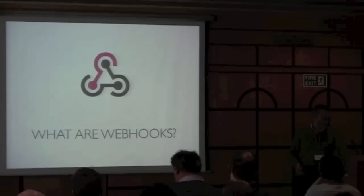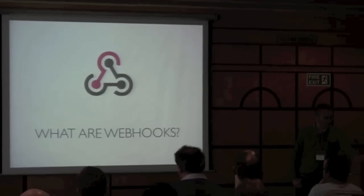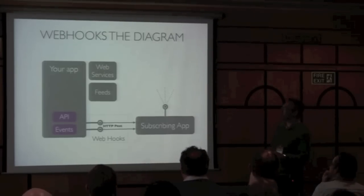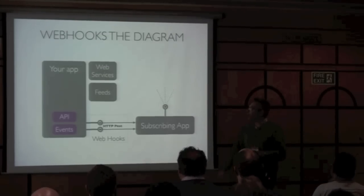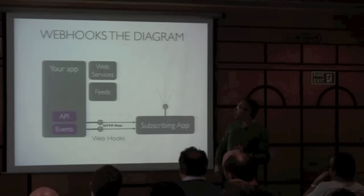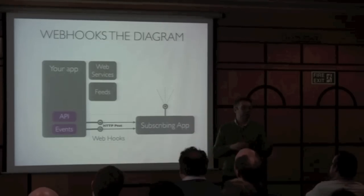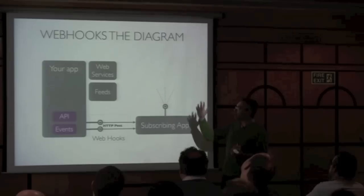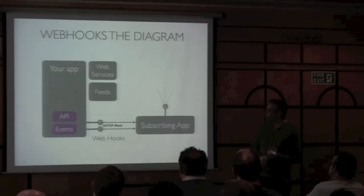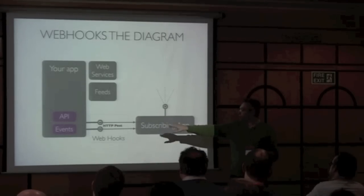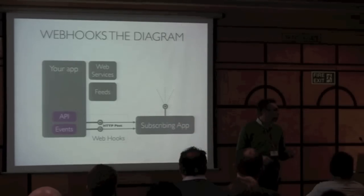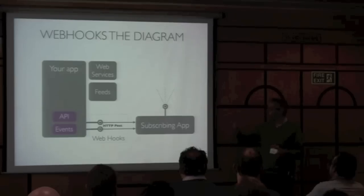They're really kind of easy to implement, and in the great tradition of technical talks I've produced a diagram, which is possibly not terribly meaningful, so I'll try and explain it. Basically what we have is your application - your web application, it could be a website, an Umbraco instance, whatever. That's normally made up of an API, events, and you might have some web services that allow people to push data in or grab data out, and you might have some feeds like RSS.